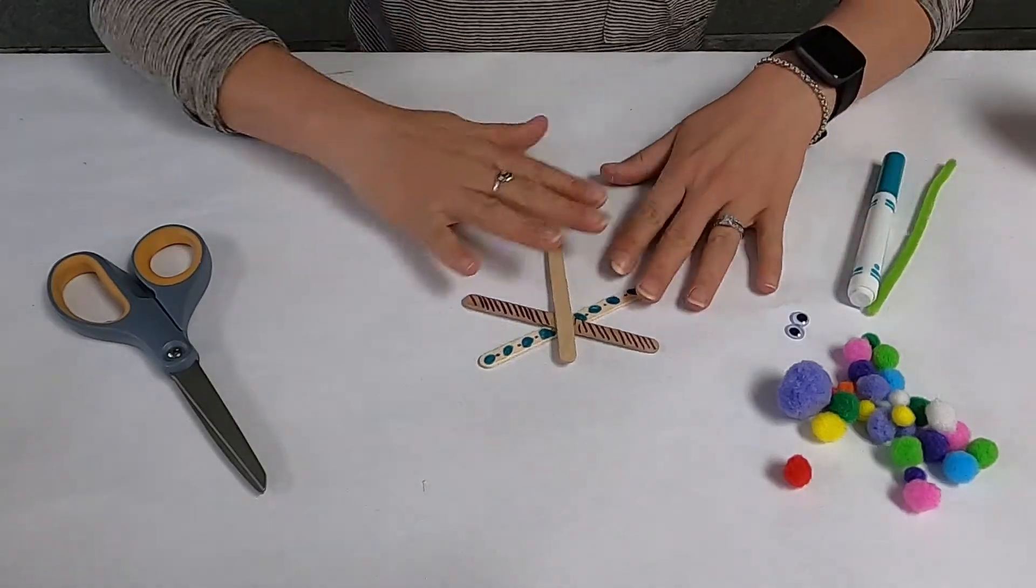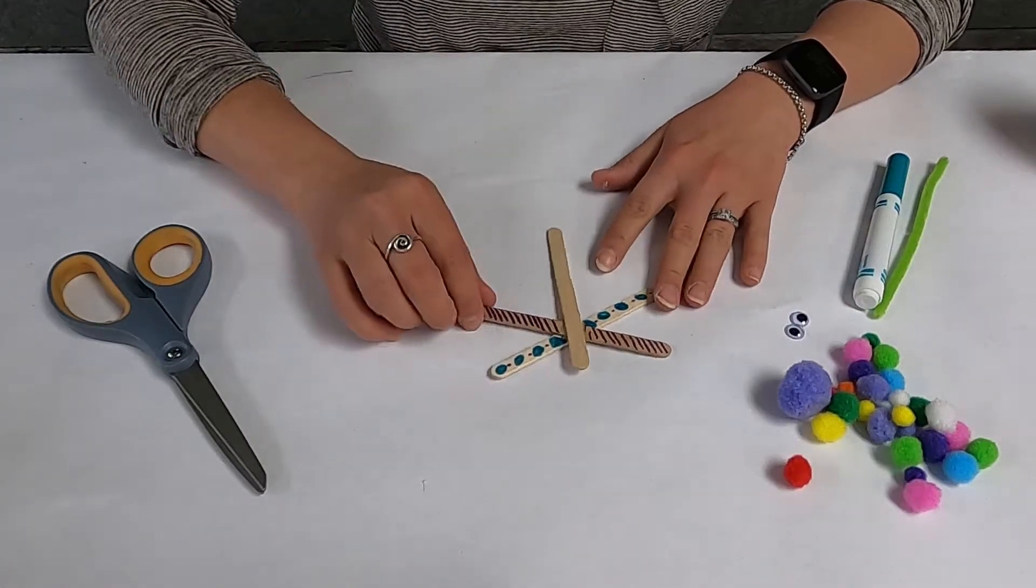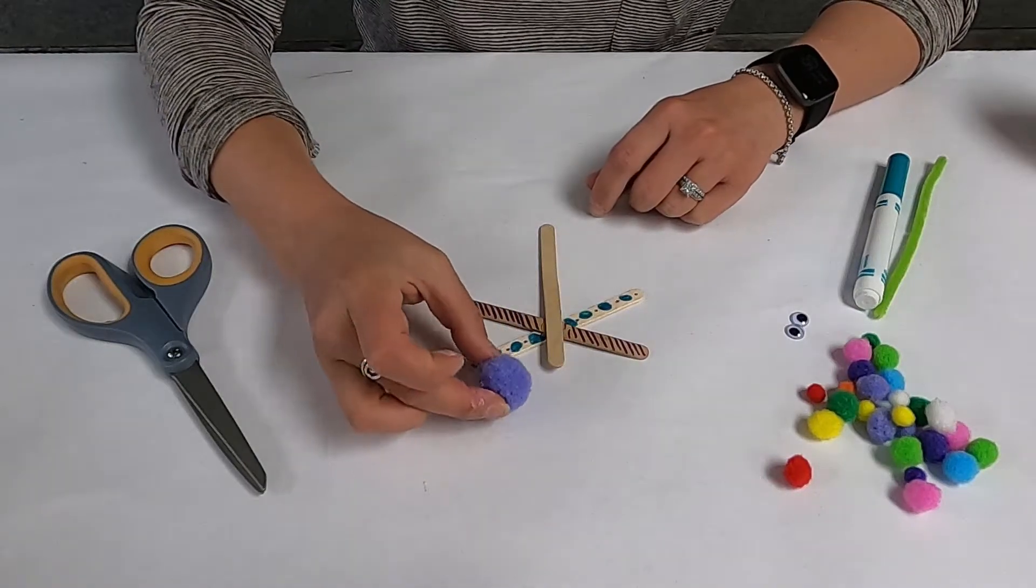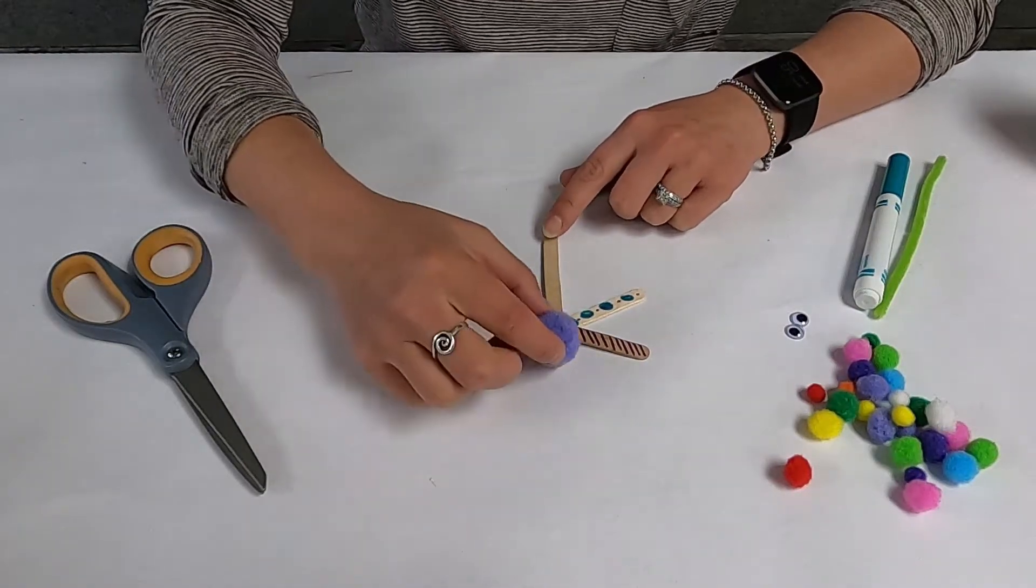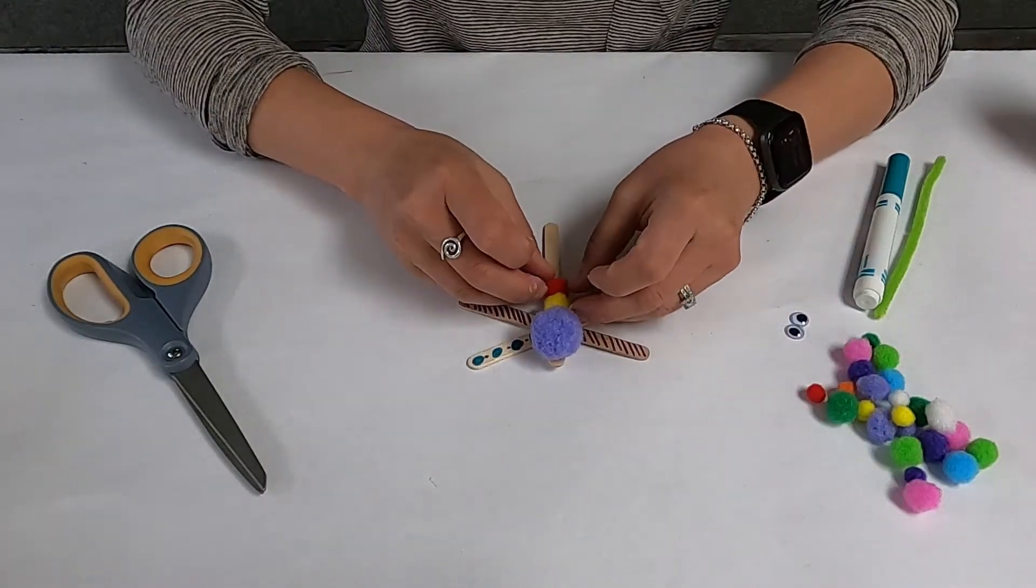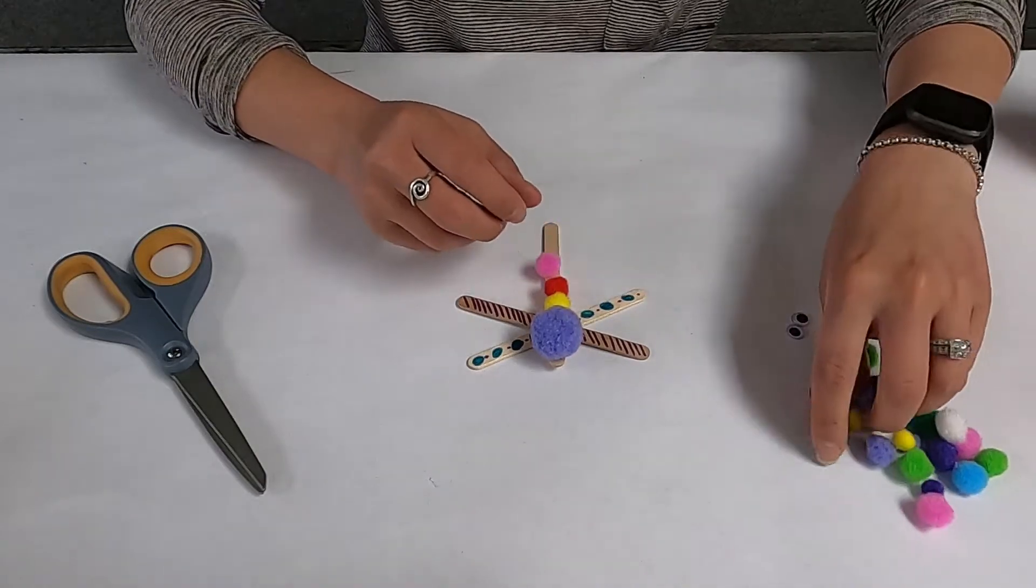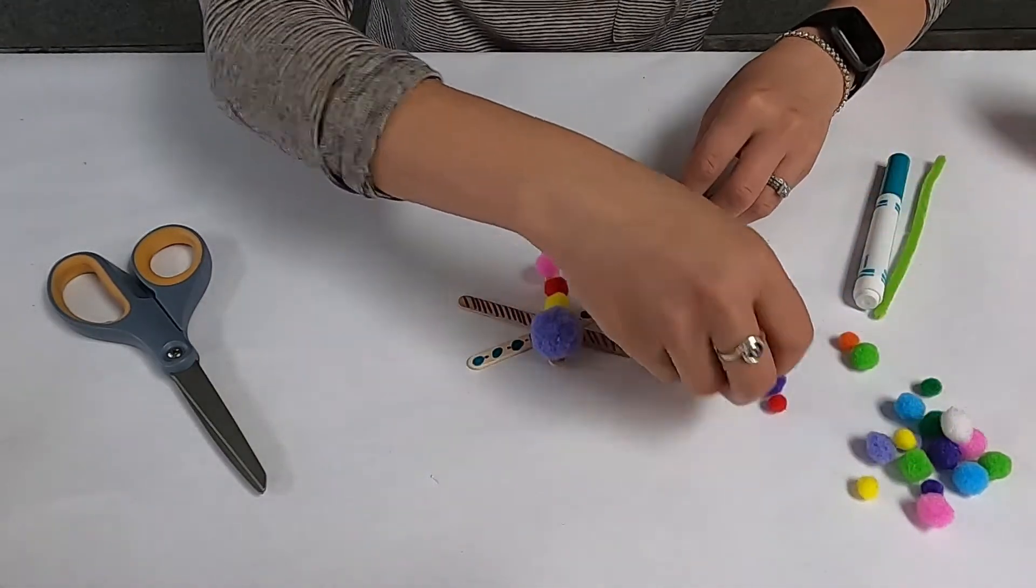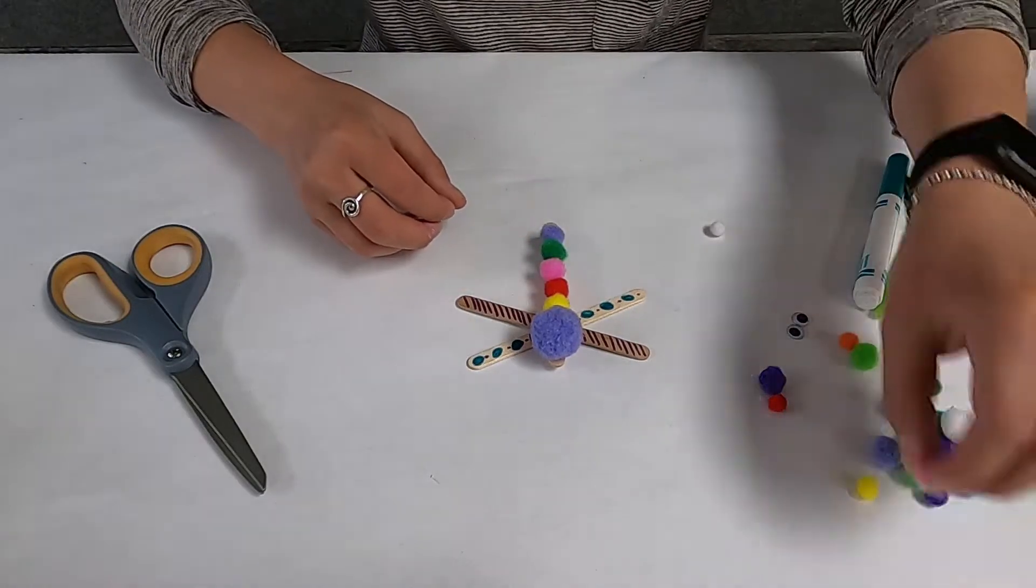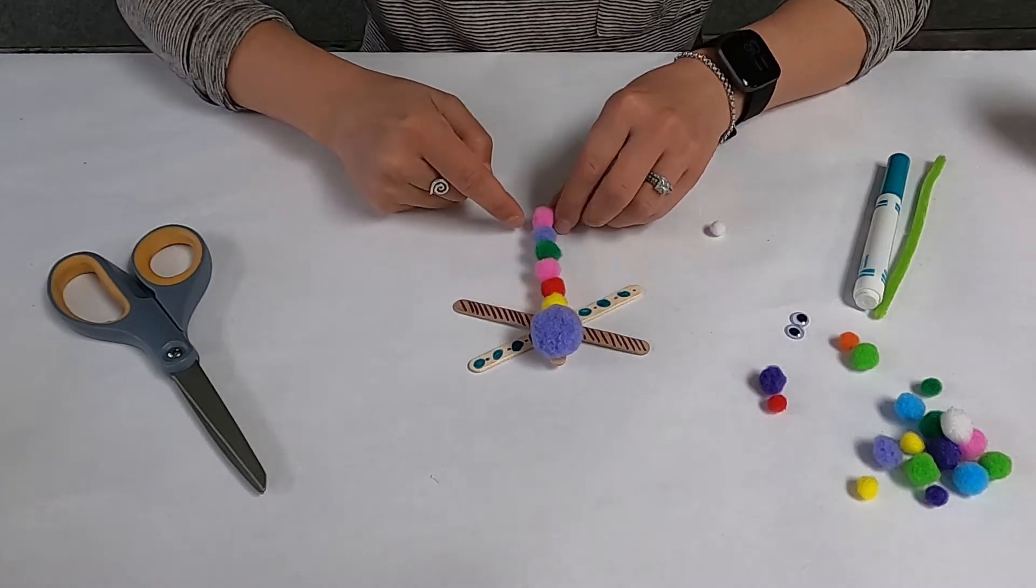So you can keep going with this. You can color this whole thing if you want, or you can start gluing. So what I'm going to do is, I have a slightly bigger one here. I'm going to glue this to the top, and then I'm going to glue all these other little ones behind it—small, medium. You can put different sizes all the way down to the very end. That's what I'm going to do—I'm going to glue all the way down.